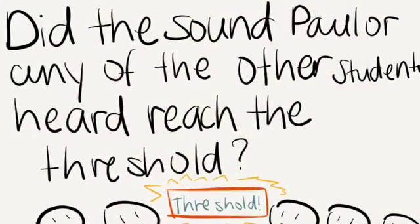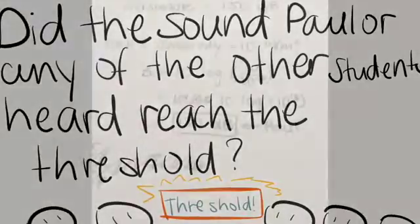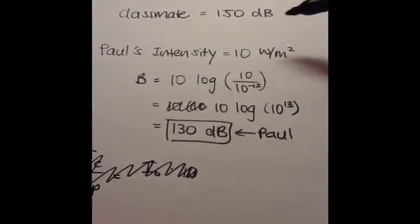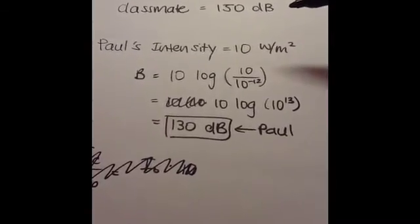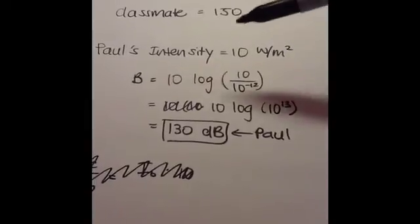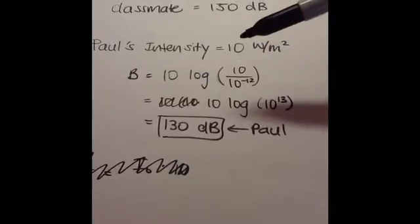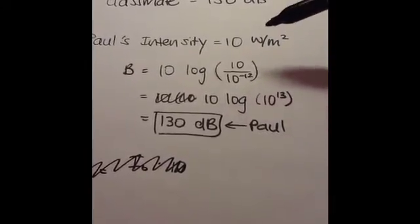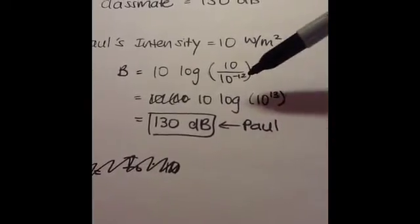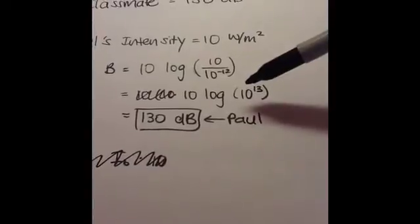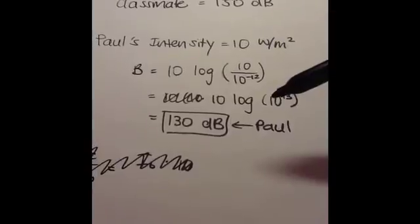Our next question asked: did the sound Paul or any of the other students hear reach the threshold of pain? We know the classmates were at 150 decibels, so now we need to find Paul's intensity level. Paul's intensity is 10 watts per meter squared, so using the same formula B = 10 log(I / I₀), with I = 10 and I₀ = 10⁻¹², we get 10 log(10¹³), giving us 130 decibels for Paul.